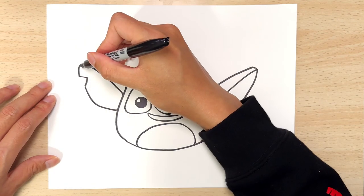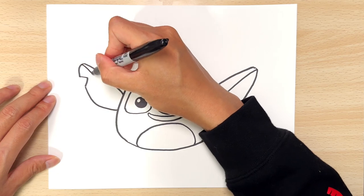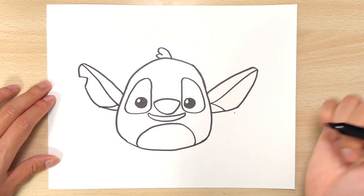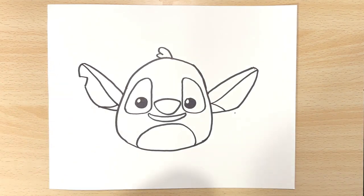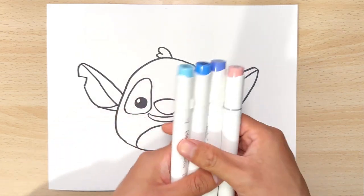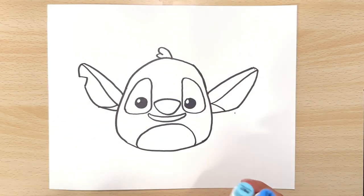And same thing, we just need to draw in the top detail and the bottom. And that's pretty much it. That is your Stitch outline. Now let's add some color. Stitch is mainly a blue character, so we have some blue colors and a little bit of pink for the ears.